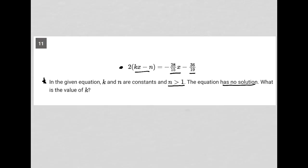Okay, so there's a lot of things going on here. The equation has no solution. So what does it mean for an equation to have no solution? This means that the variables, in this case the only variable we have is x because k and n are constants.